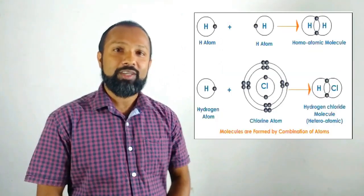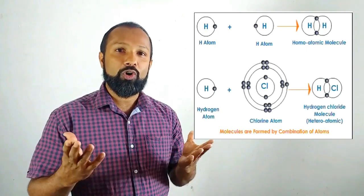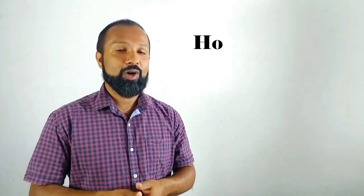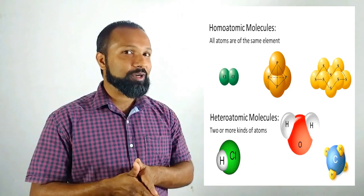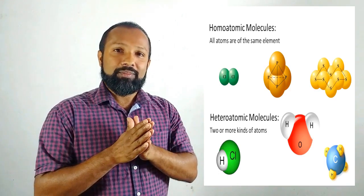Now let's study about molecules. Atoms combine together to form molecules. A molecule consists of two or more same type or different types of atoms. We can classify molecules into two categories: homoatomic molecules and heteroatomic molecules.